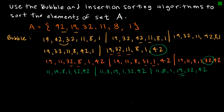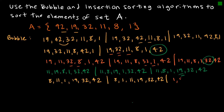Next pass: compare 11 and 8, getting 8 11 1 19 32 42. Compare 11 and 1, giving 8 1 11 19 32 42 — 11 is now in the correct spot. In the final pass, comparing the first two terms gives 1 8 11 19 32 42. The bubble sort is complete and the elements are sorted correctly.